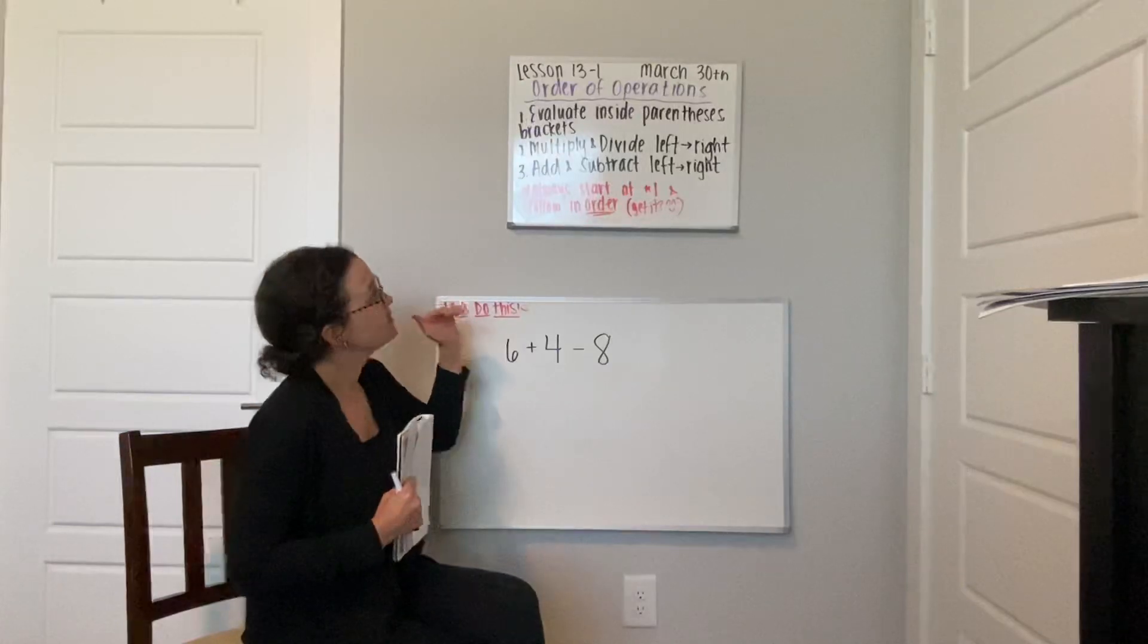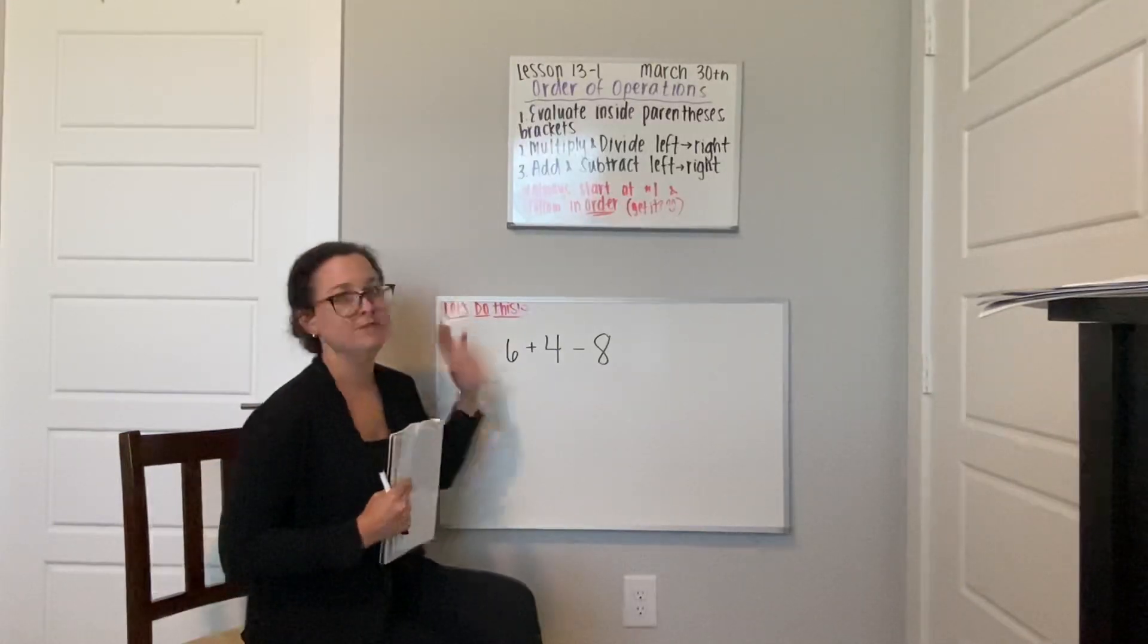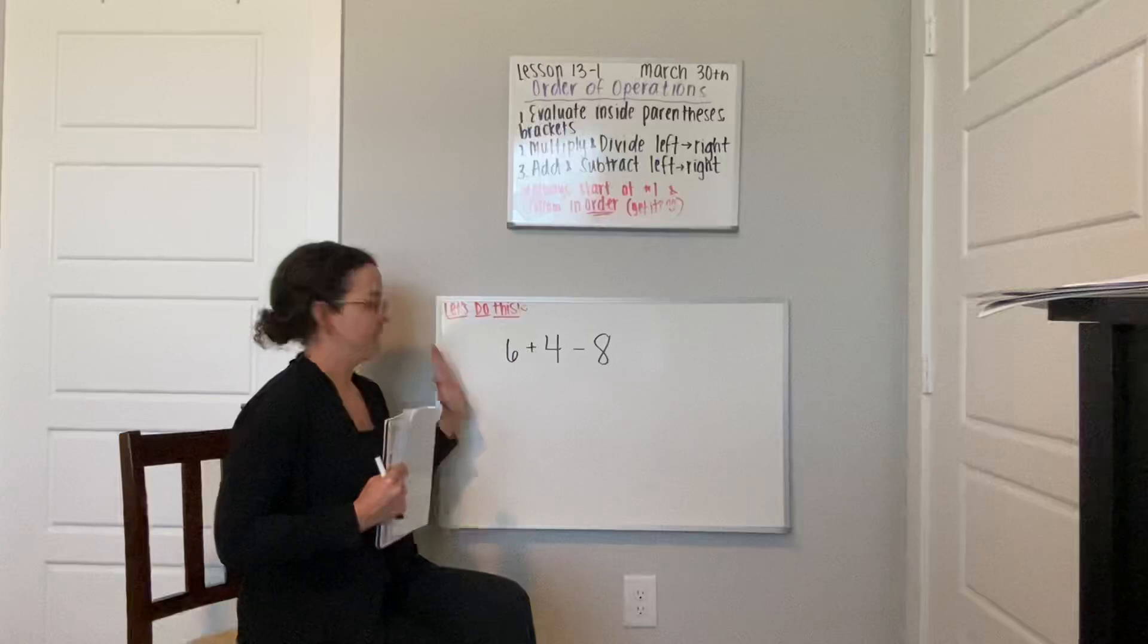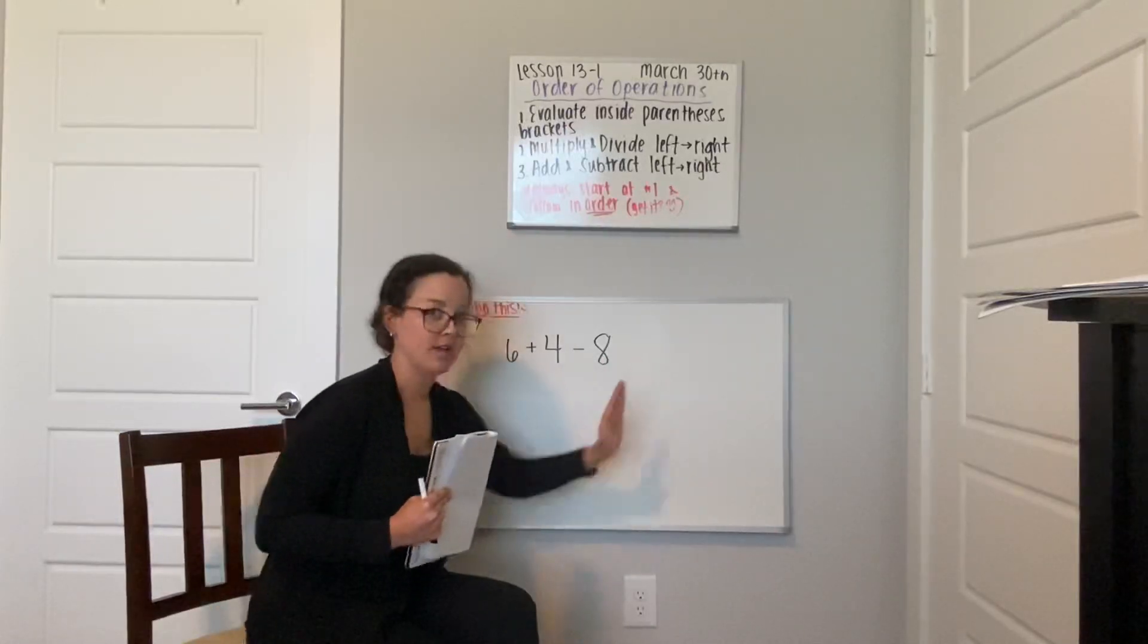You're going to then multiply and divide from left to right, never from right to left, always from here this way, like you're reading.